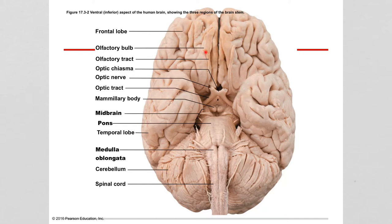Behind the olfactory bulb and olfactory tract, we see an X called the optic chiasma — optic meaning eye, chiasma meaning a cross or X. Just behind that is a little stem called the infundibulum, where the pituitary gland hangs off the brain. A little more posterior, we have two bumps called the mammillary bodies.